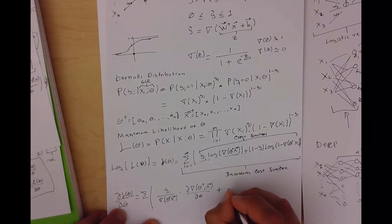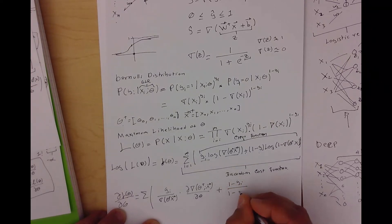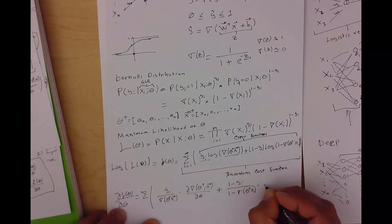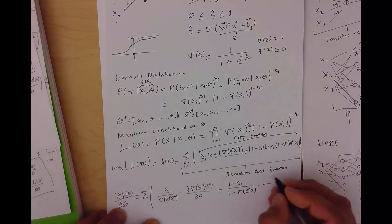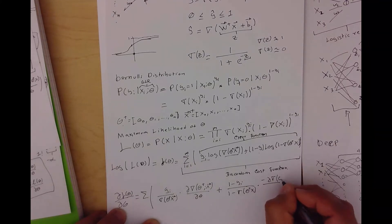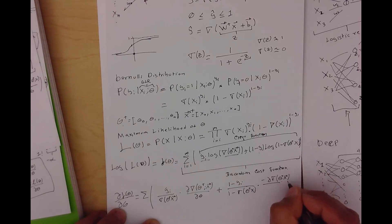We also have a minus term — the minus is coming from the minus sign we had in the expression. This has the same form as the first term.